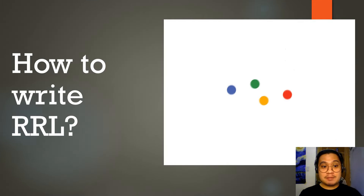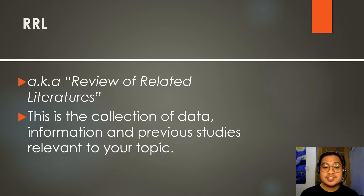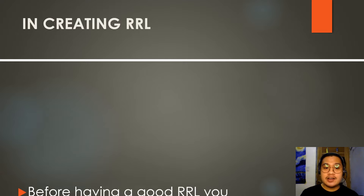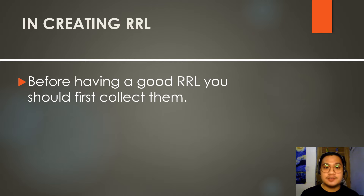The next part of the research paper is the review of related literature. RRL is the collection of data, information, and previous studies relevant to your topic. This will act as the framework or backbone of your study. Without this, your research paper will be shallow. It deepens the understanding regarding the problem. In creating the RRL, you need a good collection and should know what legitimate sites to use to find resources.